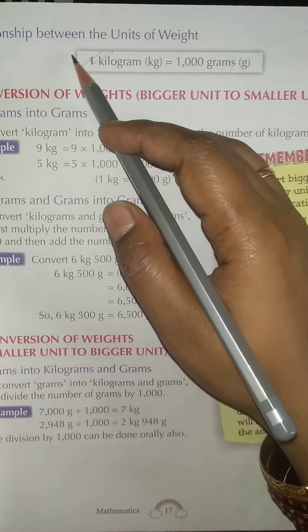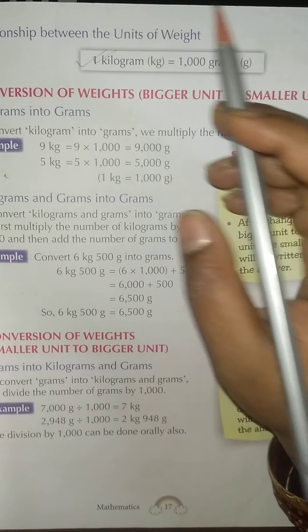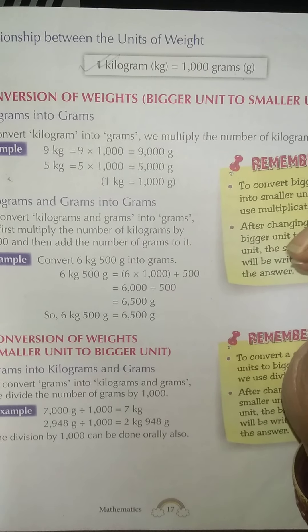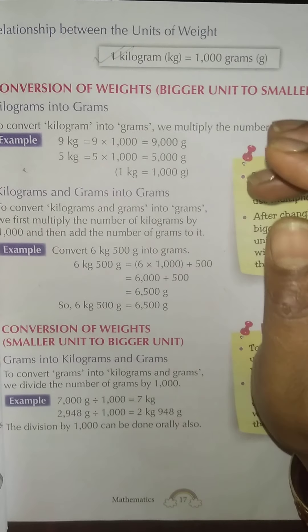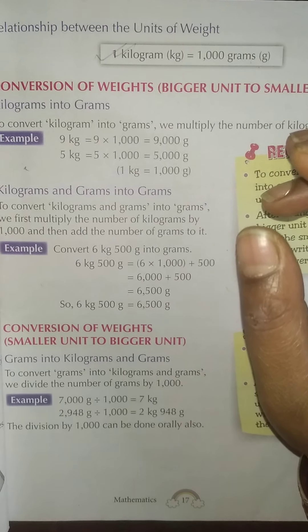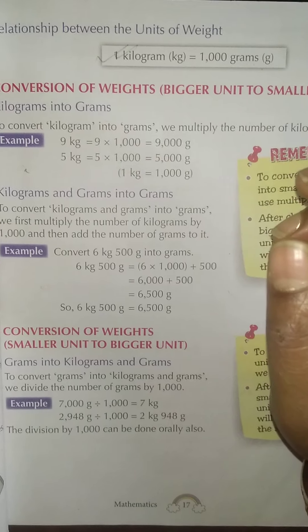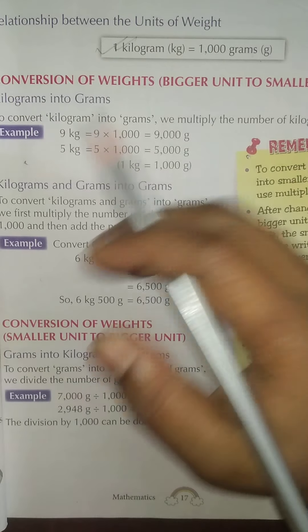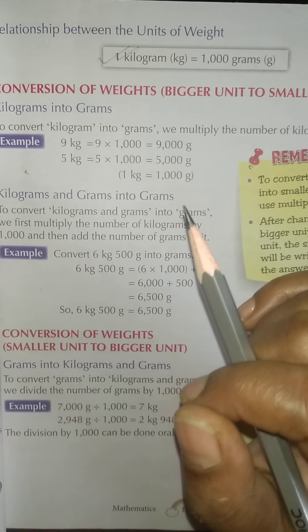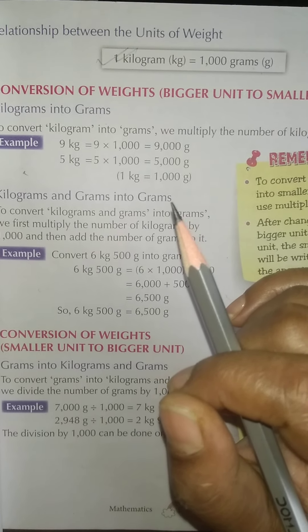One important relationship between units of weight is: 1 kg is equal to 1000 gram. With the help of this formula we are going to solve the rest of the questions. Please go through this page on whatever we have covered. Thank you.